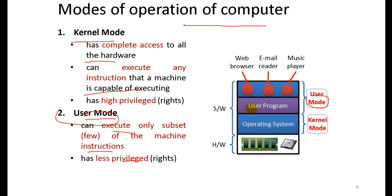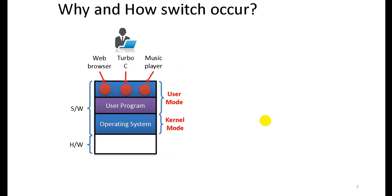In user mode, the user programs run with less privilege. User mode can execute only a subset of machine instructions. So user mode includes user programs, and kernel mode indicates the operating system, which operates directly on top of hardware.